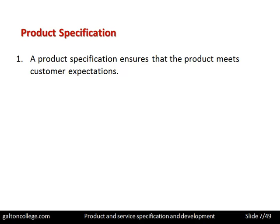The onus is on the organisation to meet customers' expectations in terms of product design, functionality, price, and quality. The product specification should be matched against customers' expectations, and the marketing section should try to determine what customers think is important and design a product that meets those requirements.